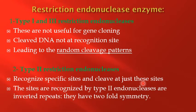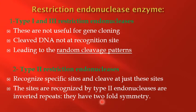The sites recognized by Type 2 endonucleases are inverted repeats and have two-fold symmetry, making them highly useful for recombinant DNA technology.